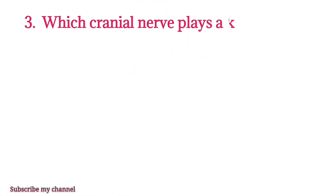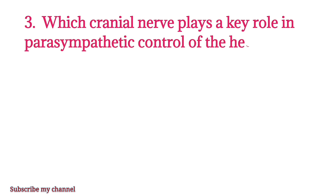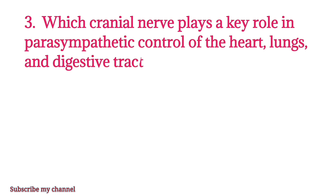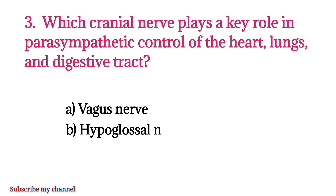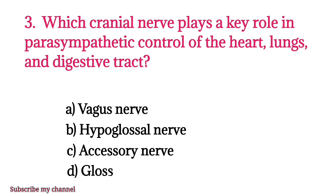MCQ number three: Which cranial nerve plays a key role in parasympathetic control of the heart, lungs, and digestive tract? Option A: vagus nerve, option B: hypoglossal nerve, option C: accessory nerve, option D: glossopharyngeal nerve. The right option is option A.